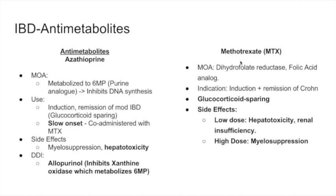The next agent is methotrexate — a dihydrofolate reductase inhibitor and folic acid analog. It is indicated for induction and remission of Crohn's disease and is also glucocorticoid-sparing. It causes hepatotoxicity and renal insufficiency at low doses, and myelosuppression at high doses.